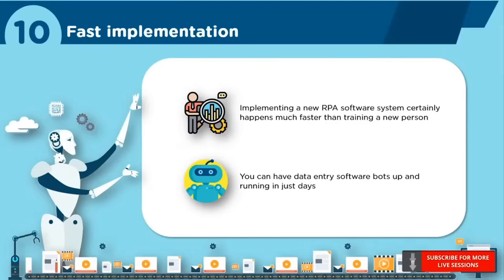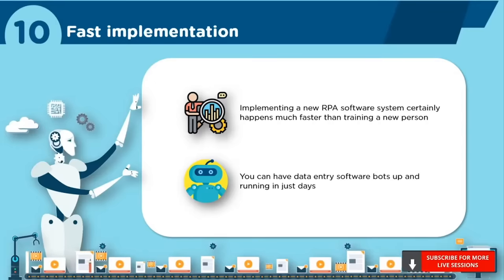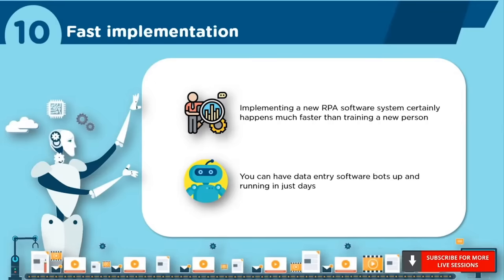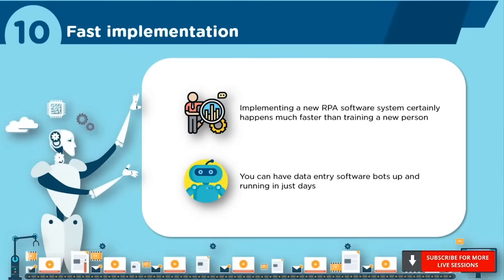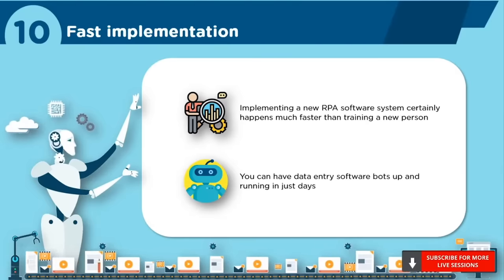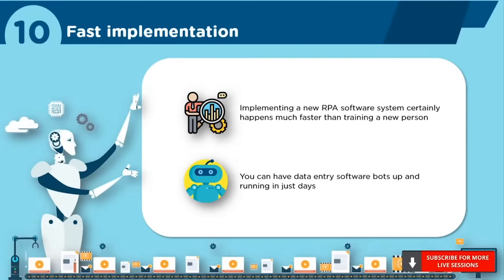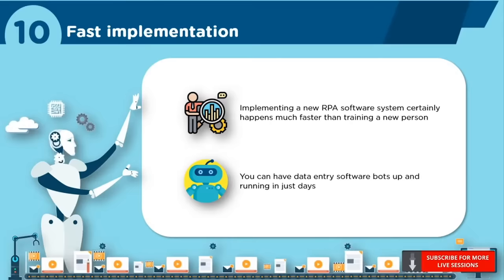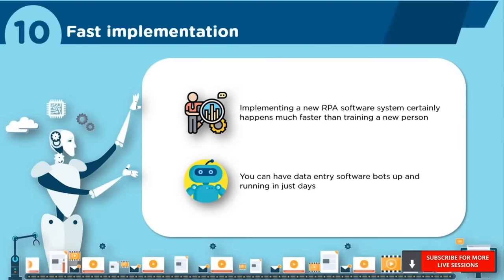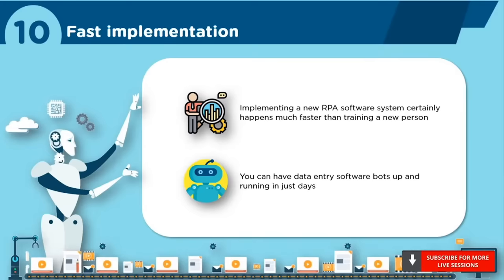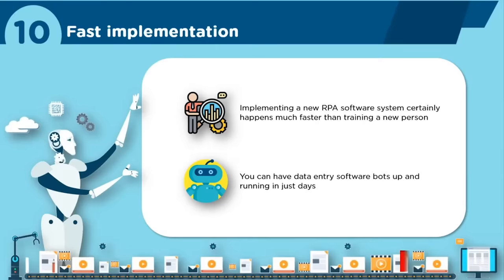Number 10: Fast Implementation. Getting data entry bots up and running goes quickly. Implementing a new RPA software system happens much faster than training a new person — you can have these bots up and running in just days. In contrast, hiring a new human employee takes a lot of time sorting out resumes, conducting interviews, going through the entire hiring process, and then spending time and energy on training them. With RPA, all of this is countered.